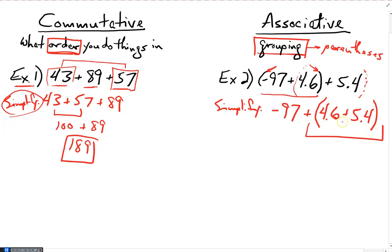When I group those two numbers together, I add them, I get 4.6 plus 5.4 is 10. So now I've got plus 10. Negative 97 plus 10 is going to give me negative 87. And now I just used the associative property of addition to simplify an expression and make it easier for me to evaluate the expression.